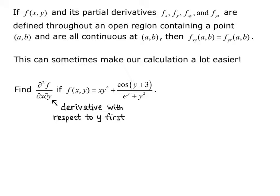Now this is the derivative with respect to y first. The way we would do that usually is the partial derivative with respect to x of the partial of f with respect to y. And notice that if we did that, this cosine of y plus 3 over the quantity e^y plus y² would be a really complicated derivative to do. We would have to use our quotient rule, and whenever possible it's nice if we can avoid that.